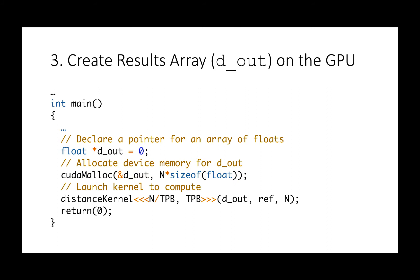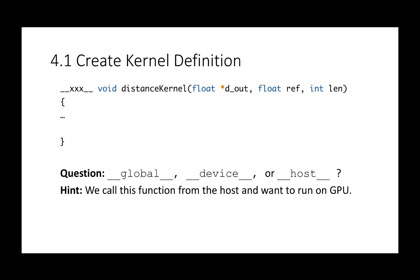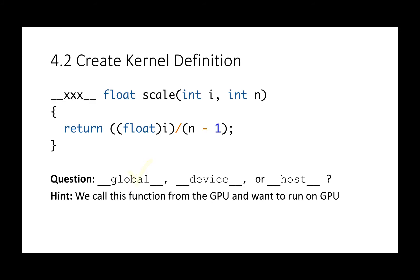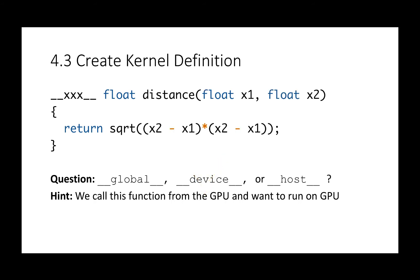We now have three functions and we need to use function type qualifiers to indicate where each function should be executed. The distance kernel is launched by the host to be run on the GPU, so the correct qualifier is __global__. For the scale function, we launch it from the distance kernel, so the correct qualifier is __device__. Similarly, the distance function is also called from within the kernel, so it is again __device__.